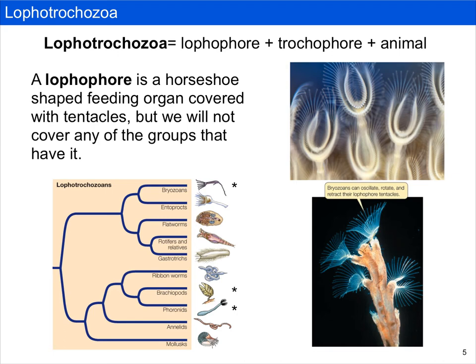Lofotrochozoa can be broken down into a couple of words. First is lophophore, and the lophophore is a horseshoe-shaped feeding organ that's covered with tentacles. Most of the groups we're going to talk about are not going to have it — in fact, only those groups marked with a star, namely bryozoans, brachiopods, and phoronids, have a lophophore.